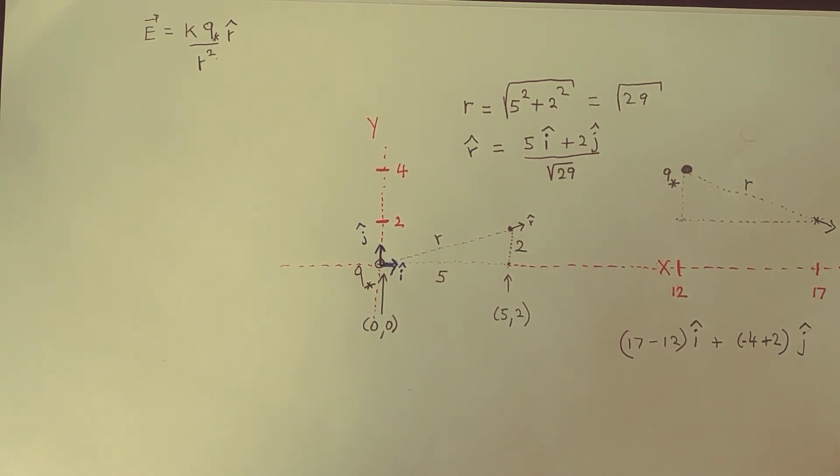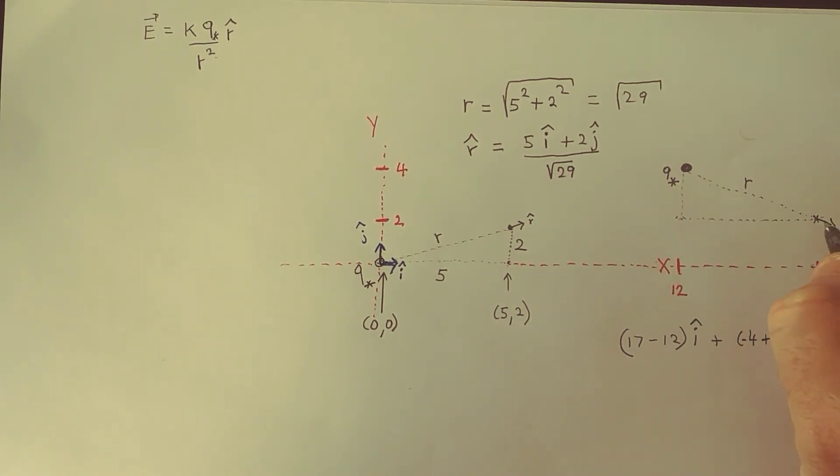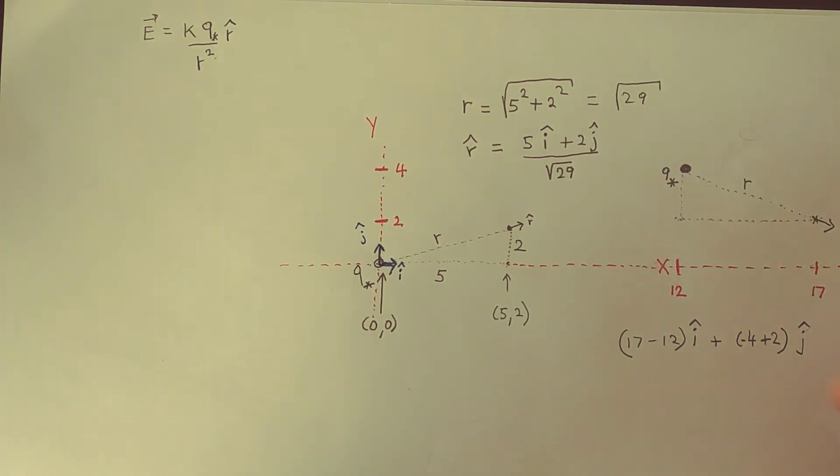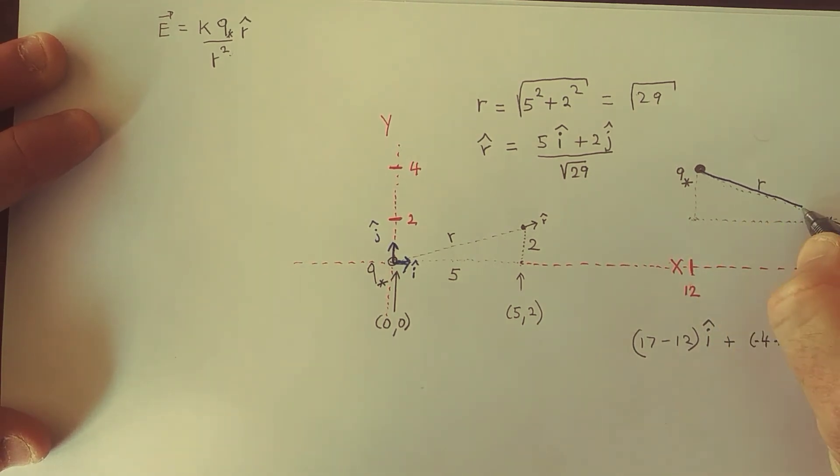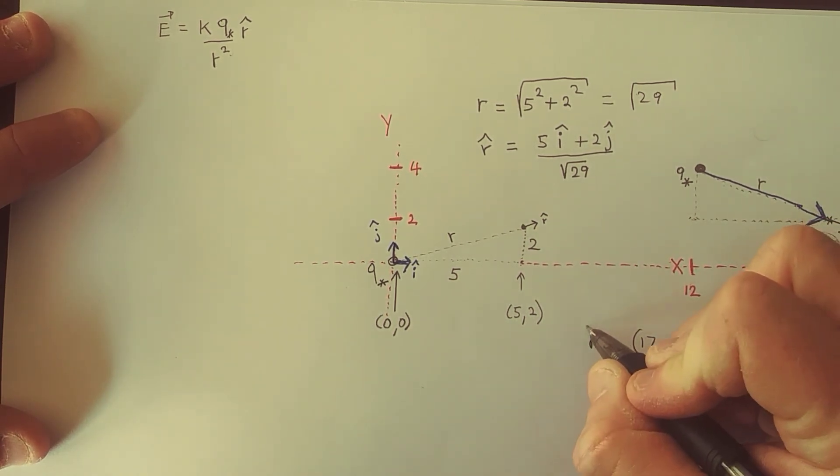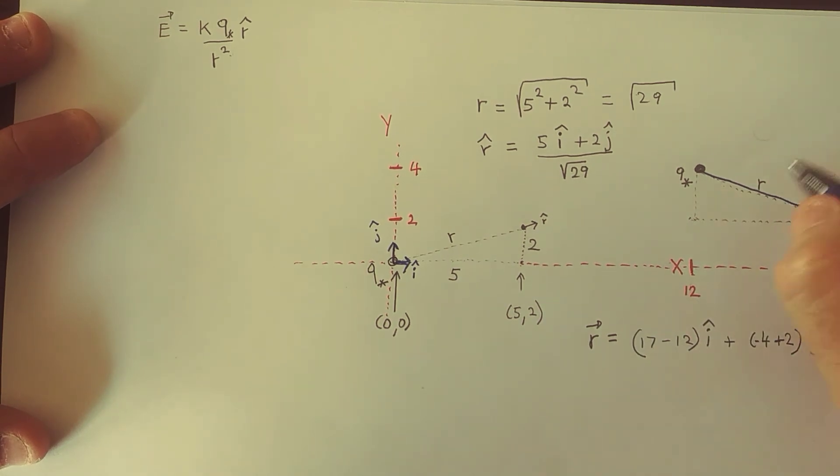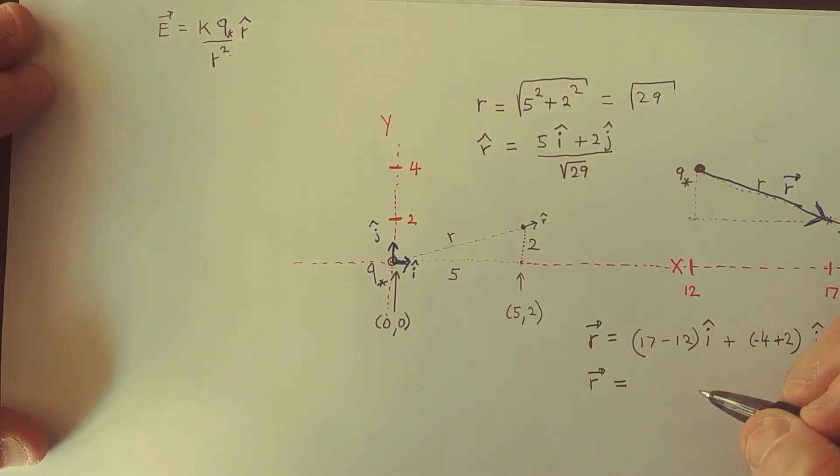But this is not a unit vector, right? So actually let's write this as there's a vector pointing this way. So let's draw a blue vector on top of this, pointing this way. And this blue vector has the components that we're writing down right now. So let's call it r vector. And therefore our vector has the right direction, the one that we care about.